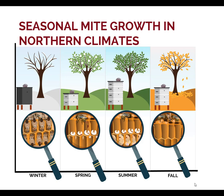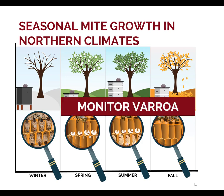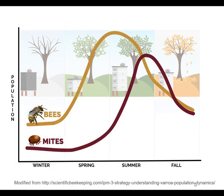Varroa mites have an exponential growth curve. Their reproduction in spring and summer can lead to very high numbers in the fall. Beekeepers can monitor Varroa in the spring, summer, and fall seasons. In northern climates, Varroa levels are generally low in the winter and early spring. Once the brood nest expands in the spring, the Varroa mite levels increase as well. When the honeybee colony reaches its peak population in the summer, Varroa populations generally grow as well, since there is a lot of brood for them to use for reproduction. Once the honeybee population decreases in the fall, the Varroa levels may remain high. Since colonies don't have much brood in the fall, many of the mites will be on adult bees instead of in sealed brood reproducing. Beekeepers in northern climates expect Varroa levels to be at their highest in the late summer and the fall.